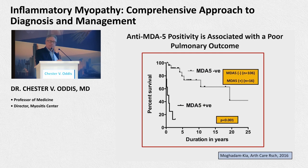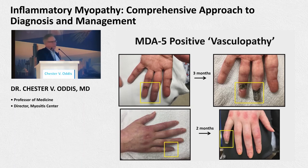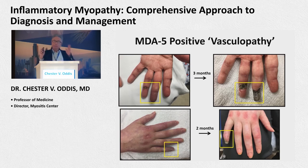MDA5 is also a vasculopathy — two patients I show here don't have significant lung disease but one lady showed up and three months later had necrosed her fingers due to the severity of skin manifestations. Another patient, a college volleyball player, also necrosed her digits. There can be different manifestations in patients with this particular autoantibody.